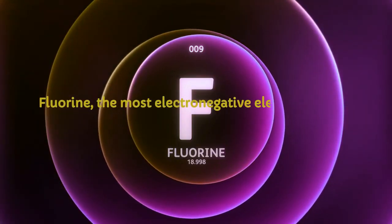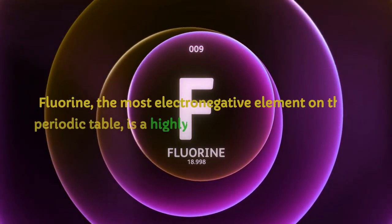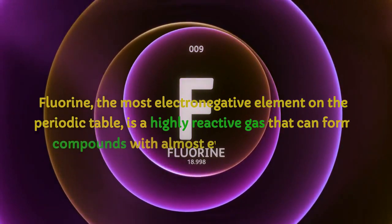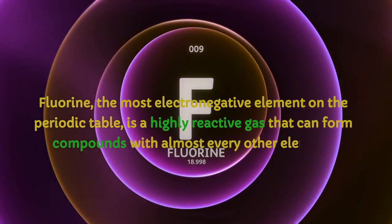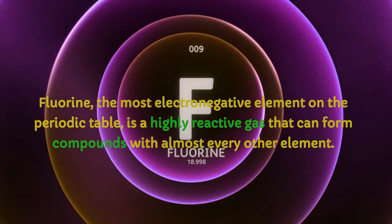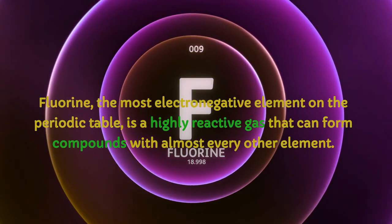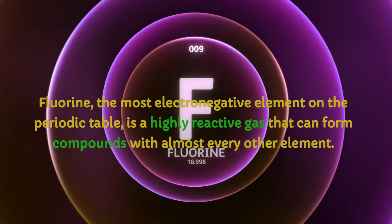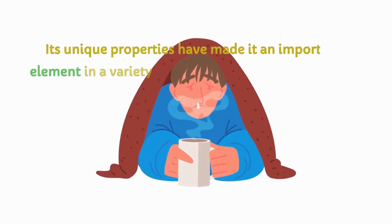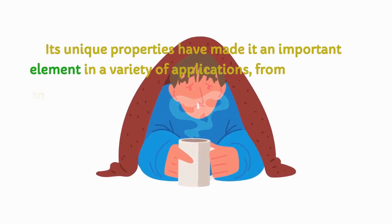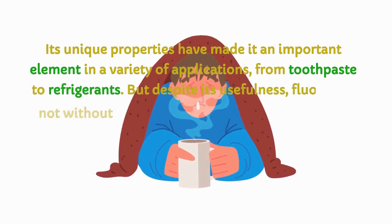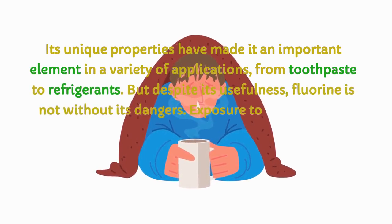Fluorine, the most electronegative element on the periodic table, is a highly reactive gas that can form compounds with almost every other element. Its unique properties have made it an important element in a variety of applications, from toothpaste to refrigerants.